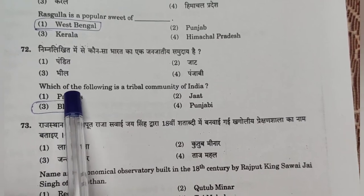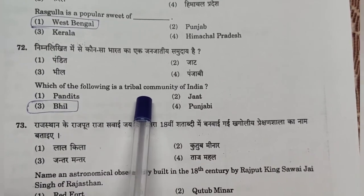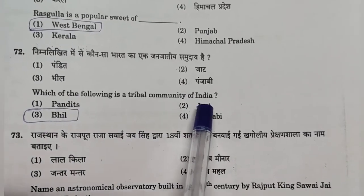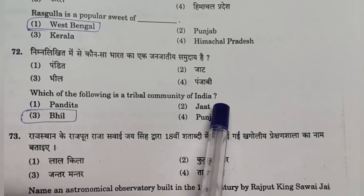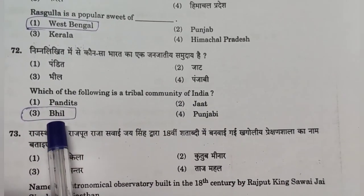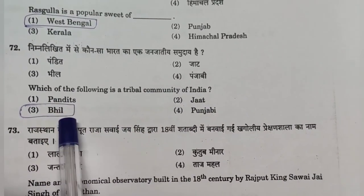Question 72: Which of the following is a tribal community of India? Answer: Option 3 — Bhil.